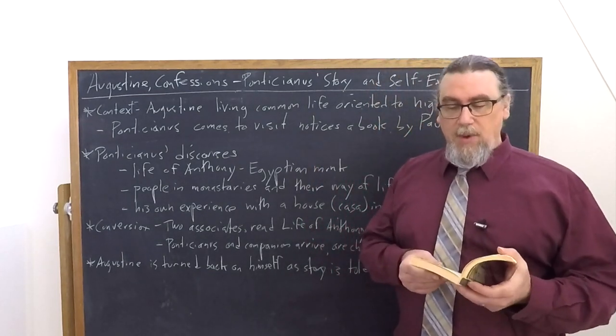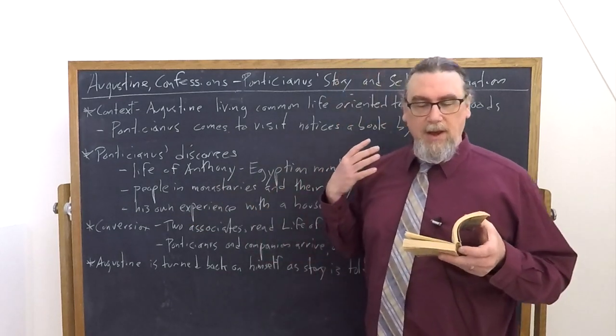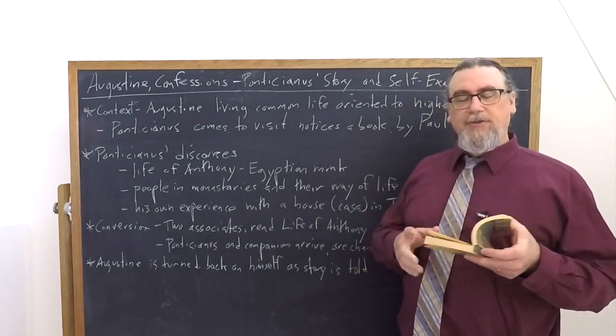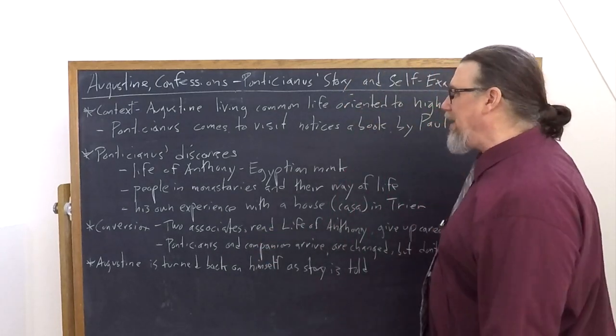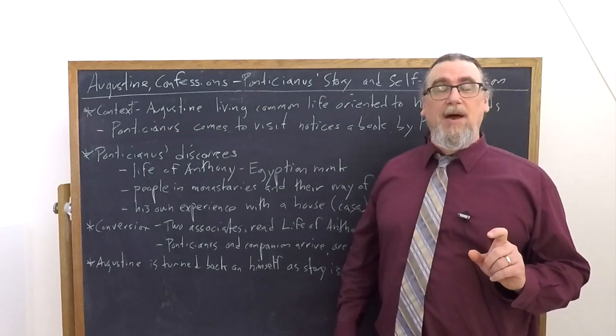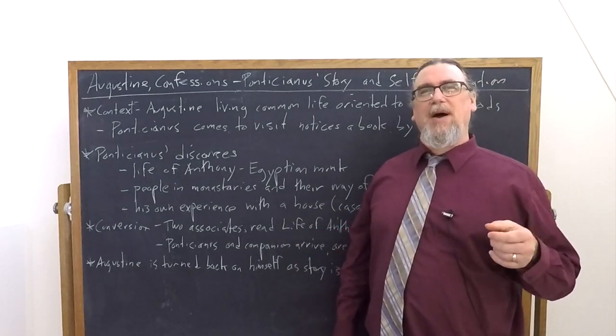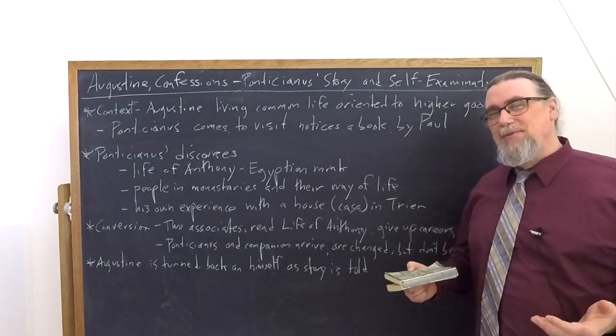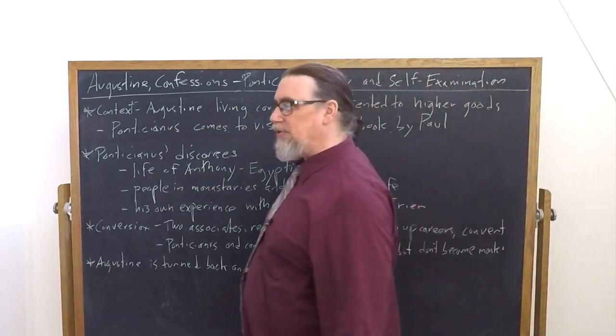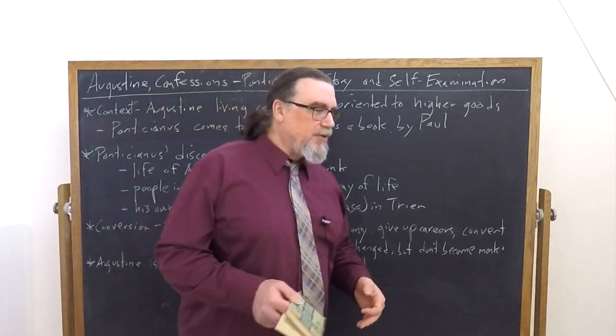A countryman of ours insofar as being from Africa, being from North Africa, who held a high office at court. I don't know what he wanted from us, but as we sat down to talk together, he chanced to notice a book, a book that was laying on a gaming table. And this is a very interesting thing that we should have a little bit of a digression about. It's a book by who? By Paul, Paul, the apostle. Why would there be a book by itself? Not part of a big bound codex that we call the Bible. Well, because when Augustine is talking about the Christian scriptures, he doesn't mean necessarily one big book that contains them all. There were all of these different books that would circulate independently of each other and might be read for their own sake.